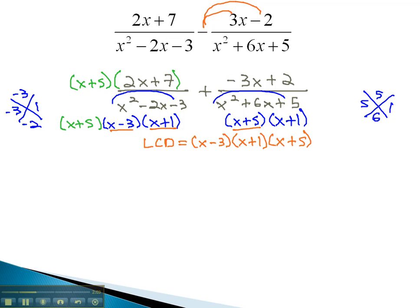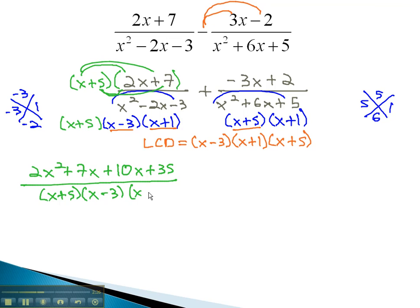This is going to require us to FOIL and multiply out. x times 2x is 2x squared. x times 7 is 7x, 5 times 2x is 10x, 5 times 7 is 35, over our common denominator, x plus 5, x minus 3, x plus 1.